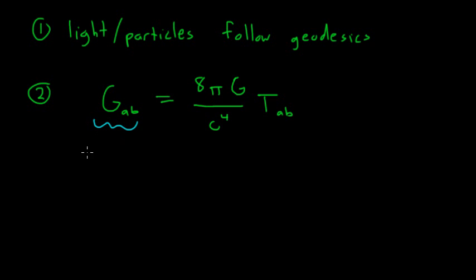And this tensor depends only on the metric and the curvature of the space-time that we're dealing with. So this is a purely geometric quantity. There's nothing else that is involved in this side of the equation. These are all constants, so we don't really need to worry about that, but we do notice that Newton's gravitational constant is in there, which is kind of interesting.